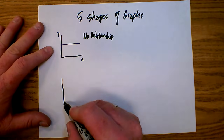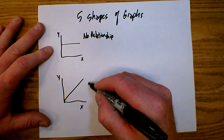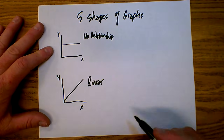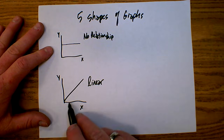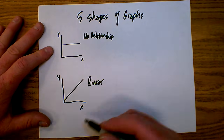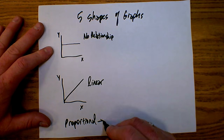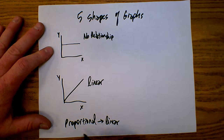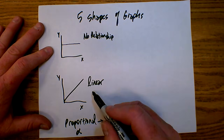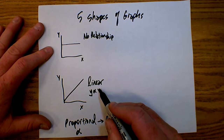The second type of graph we might see is a standard linear graph, the graph of a line. In a linear graph, as x gets bigger, y gets bigger proportionally. We use the word proportional to describe the relationship when a graph is linear. Proportional means linear. The symbol we use for proportional is like a little fish symbol, kind of like a Greek letter alpha. So we say y is proportional to x.